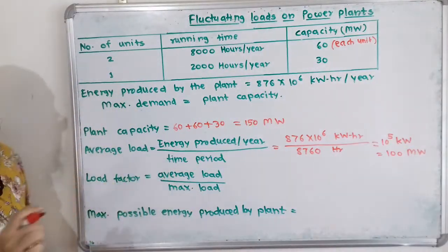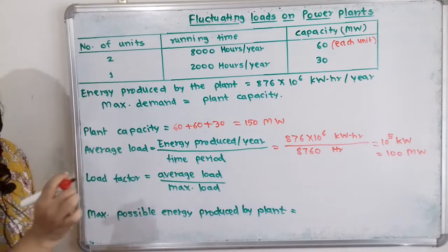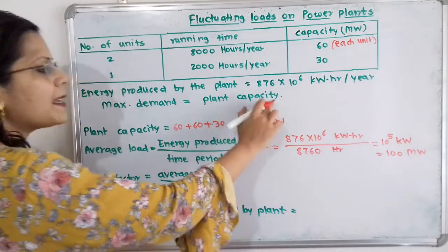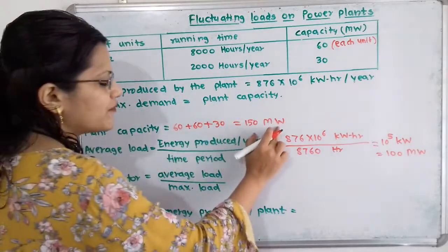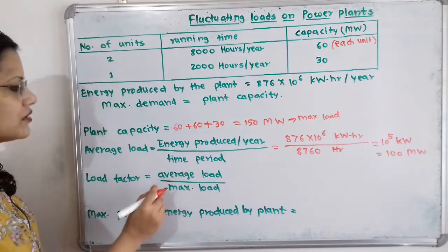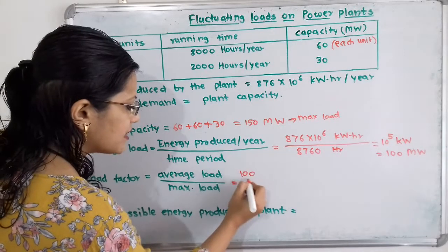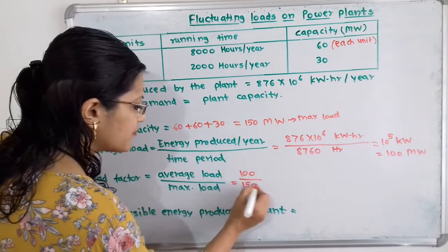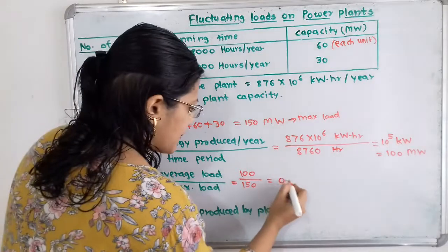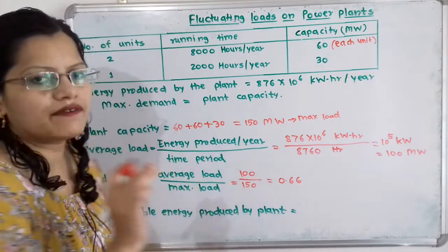Then we will move to the calculation of plant load factor. Load factor is average load divided by maximum load. Maximum demand, or maximum load, we have to consider as plant capacity, which is 150 MW. So, load factor = 100 divided by 150 = 10/15 = 0.66. This load factor has no unit because MW cancels with MW.